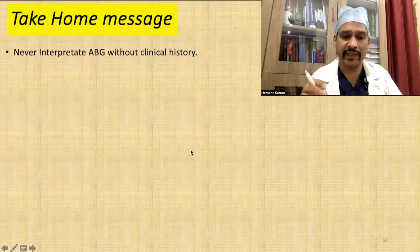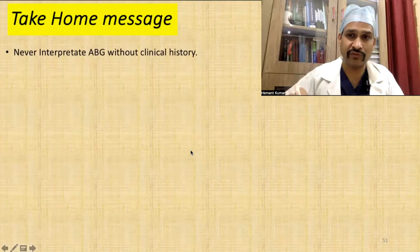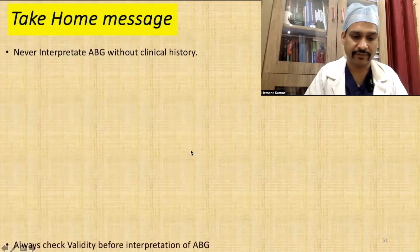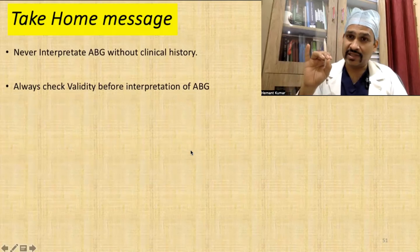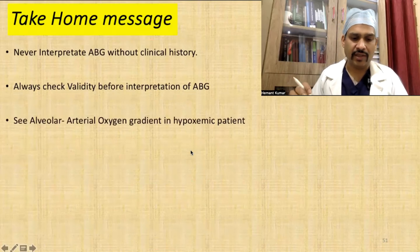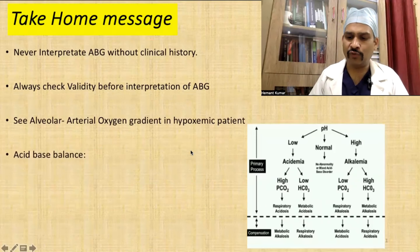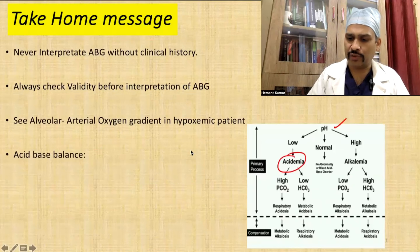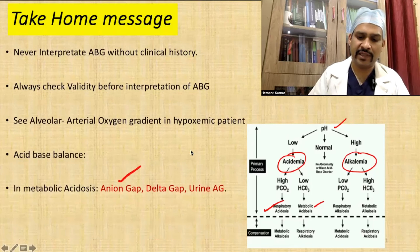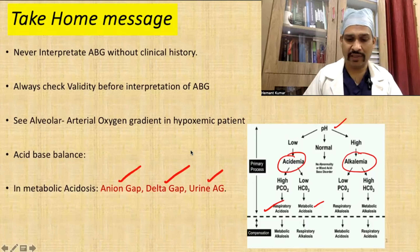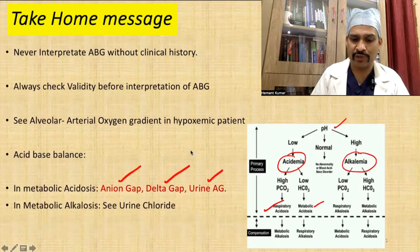Take-home messages: never interpret ABG without clinical history, as it gives clues about what disease you are dealing with. Always check validity before interpreting ABG. Check the A-a gradient for hypoxemic patients. For acid-base balance, determine if pH is acidotic or alkalotic, then identify whether it is respiratory or metabolic, and assess compensation. If metabolic acidosis, check anion gap, delta gap, and urine anion gap for NAGMA causes. If metabolic alkalosis, check urine chloride to determine if it is chloride-responsive or chloride-resistant.